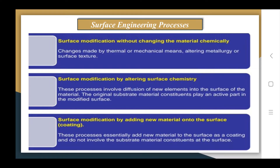The third process belonging to surface engineering is coating — surface modification by adding new material onto the surface. In this category, the processes involve adding a new material to the surface as a coating, and they do not involve the substrate material constituting part of the surface. This is what is called coating.